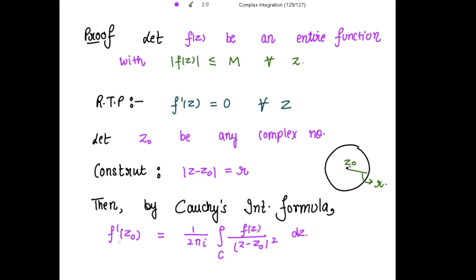Why I have taken this first derivative at z equal to z_0? Because I need to prove that first derivative of the function is 0. For that I have taken the first derivative of the function at z equal to z_0, and I applied the Cauchy integral formula over here. This I need.